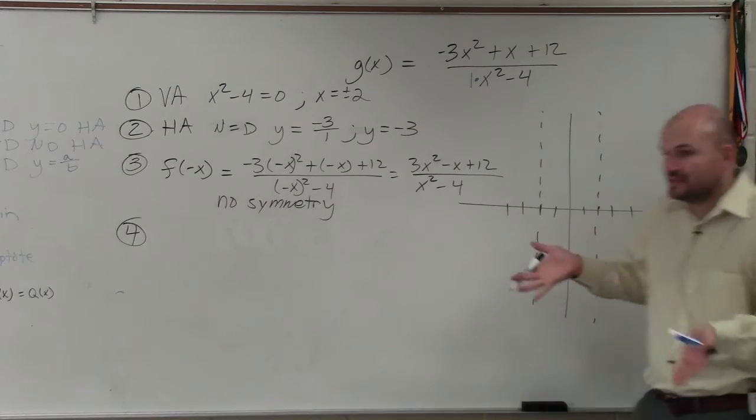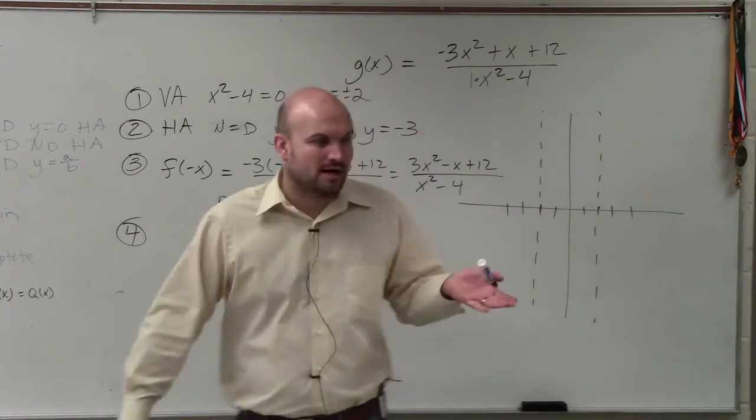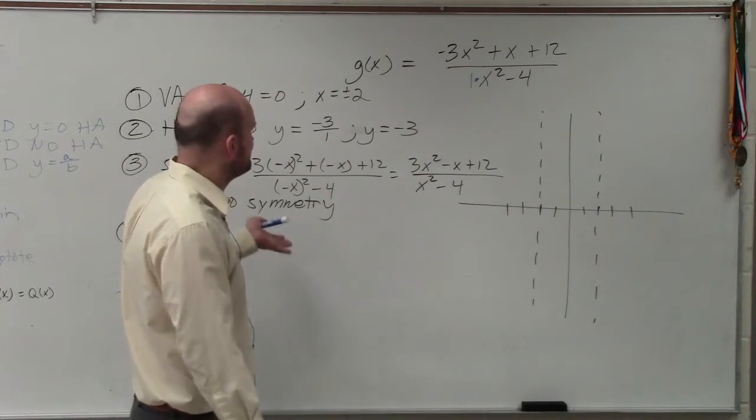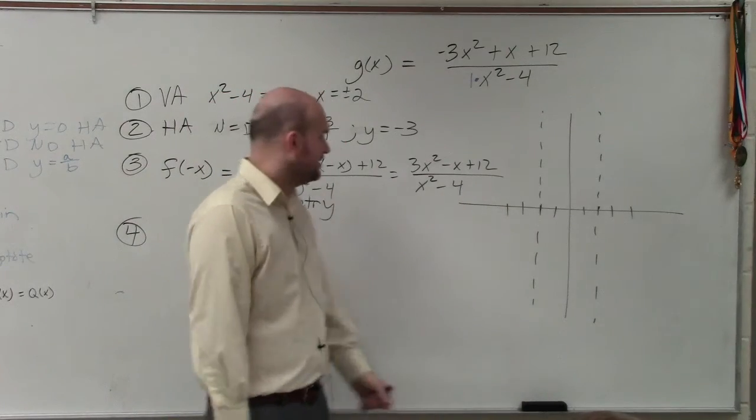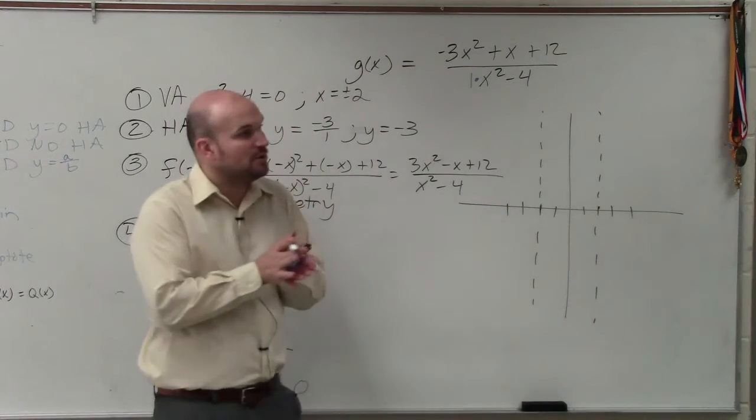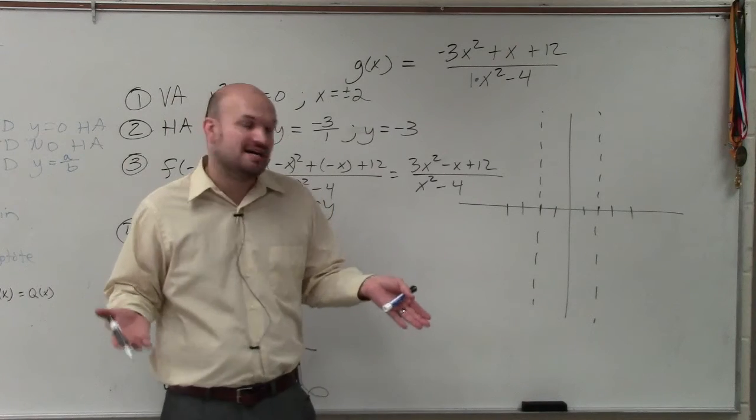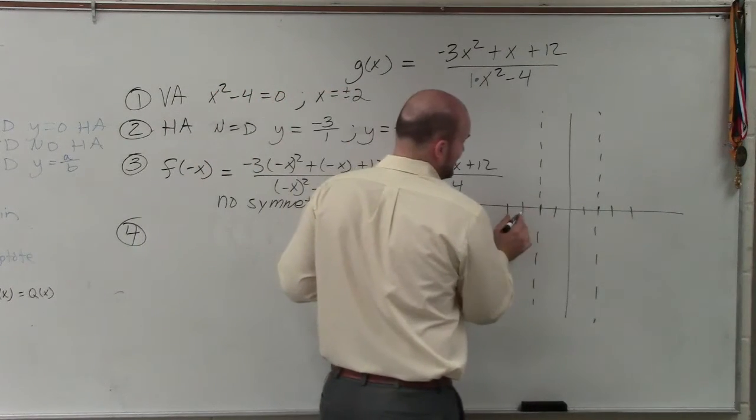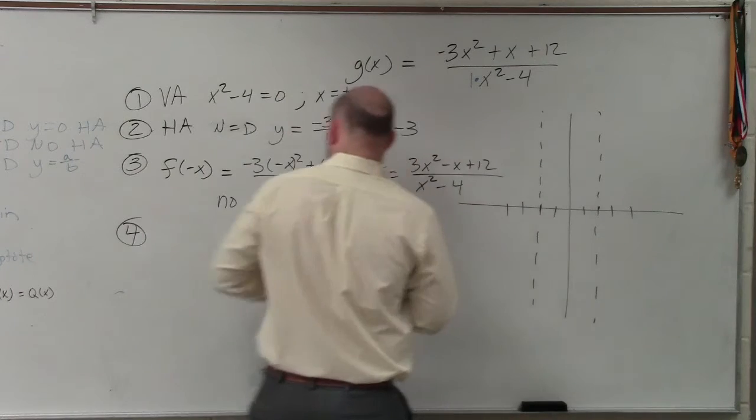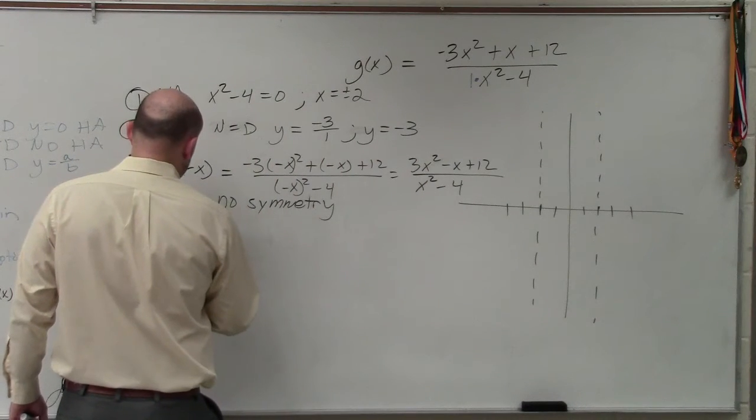Basically, ladies and gentlemen, we know that the points that make up our graph, we're going to plug in points for x and define their values. So I always like to do two points to the left and to the right of each asymptote. So in this case, I would do negative 4, negative 3, negative 1, 0, 1, 3, 4.